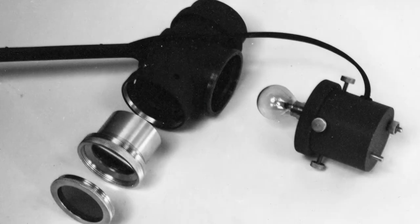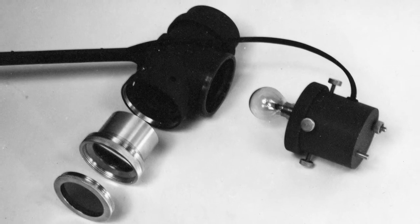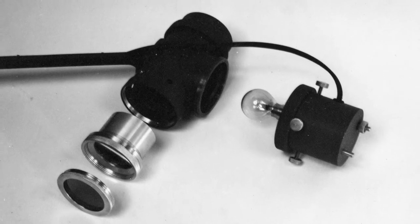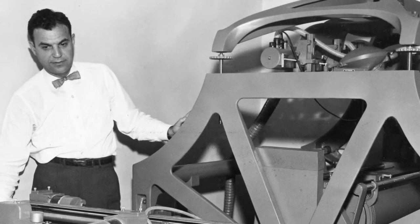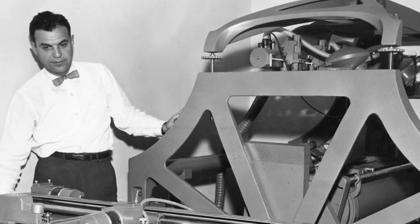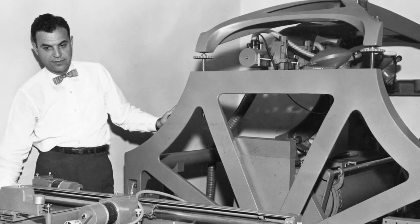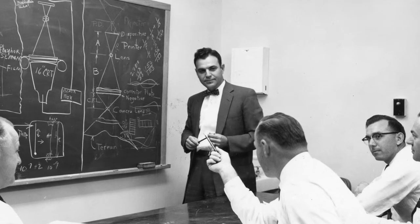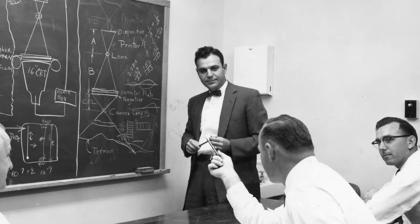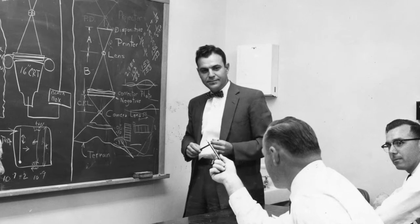My father invented a device called stereo templates that corrected the distortion in lenses. He was a photogrammetric engineer, which is the science of the camera. And his specialty was aerial photography. So he made a mathematical calculation so that when you blew up photographs, it brought back in the curvature of the earth, which is pushed away from the photography. So if you're looking at Google Maps today, that wouldn't be possible without the invention he made way back in 1957.